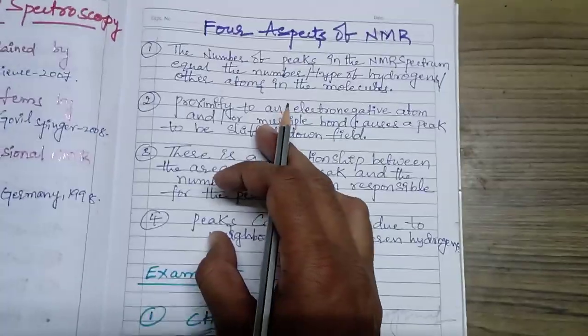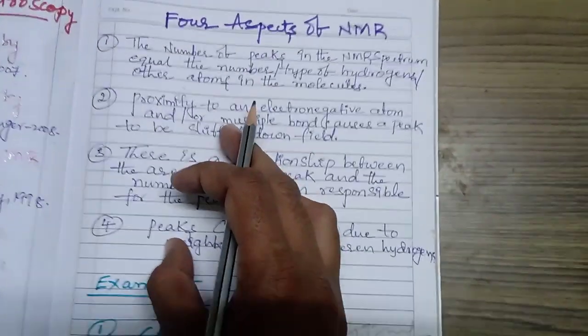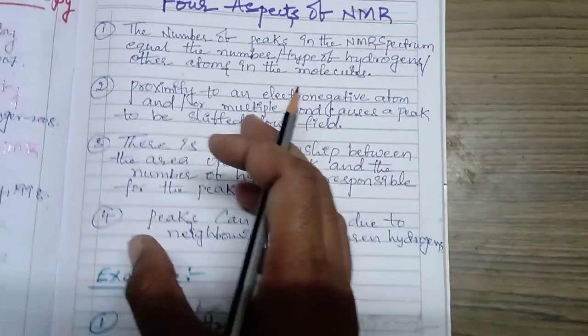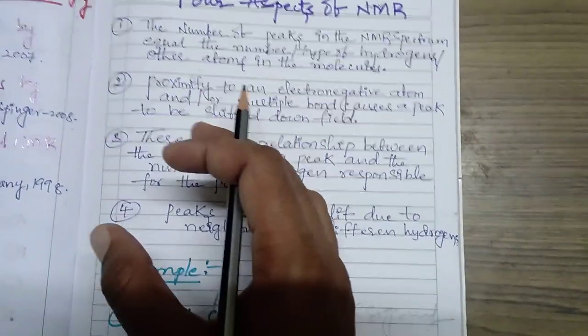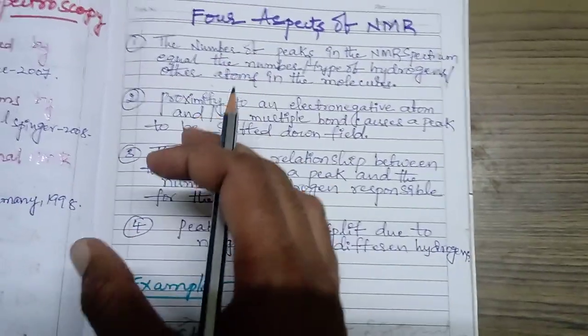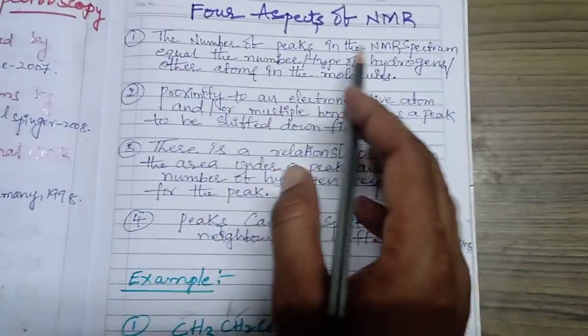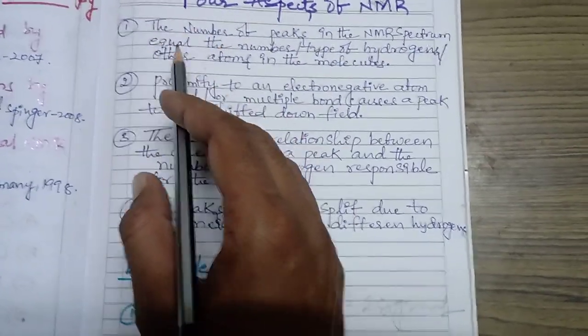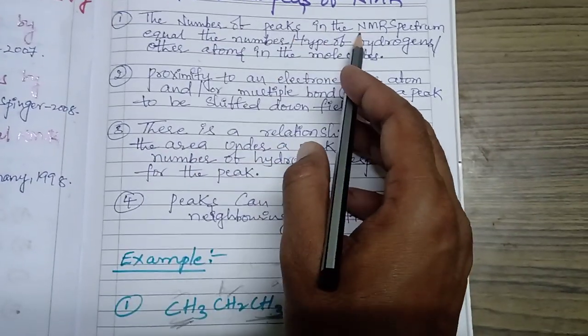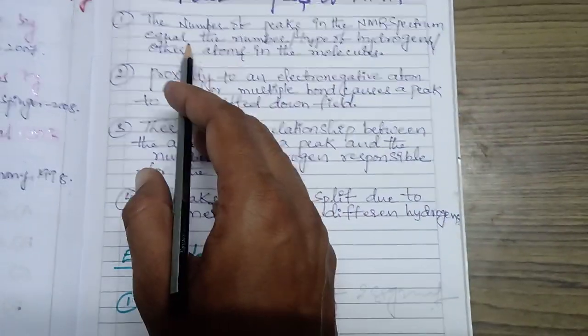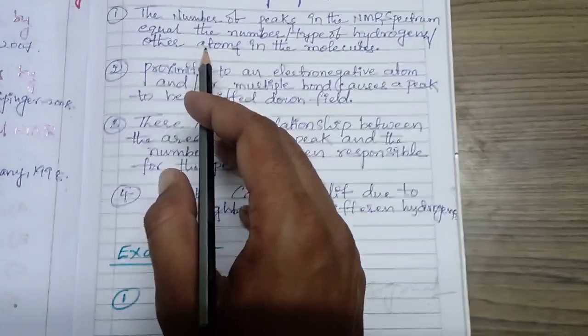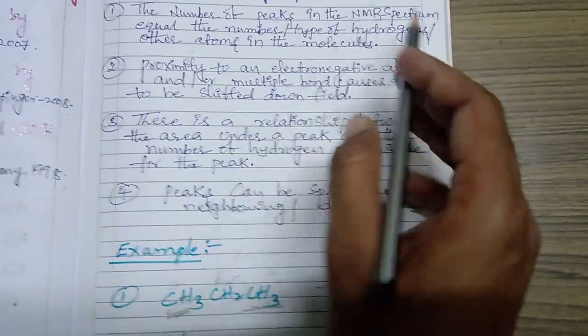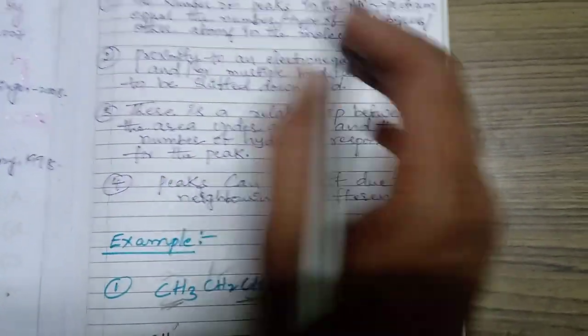I will introduce today only the four aspects of NMR spectroscopy. Tomorrow we'll go to the next lecture in detail for each aspect. First aspect of NMR spectroscopy: the number of peaks in the NMR spectrum equals the number or type of hydrogens or other atoms in the molecules.